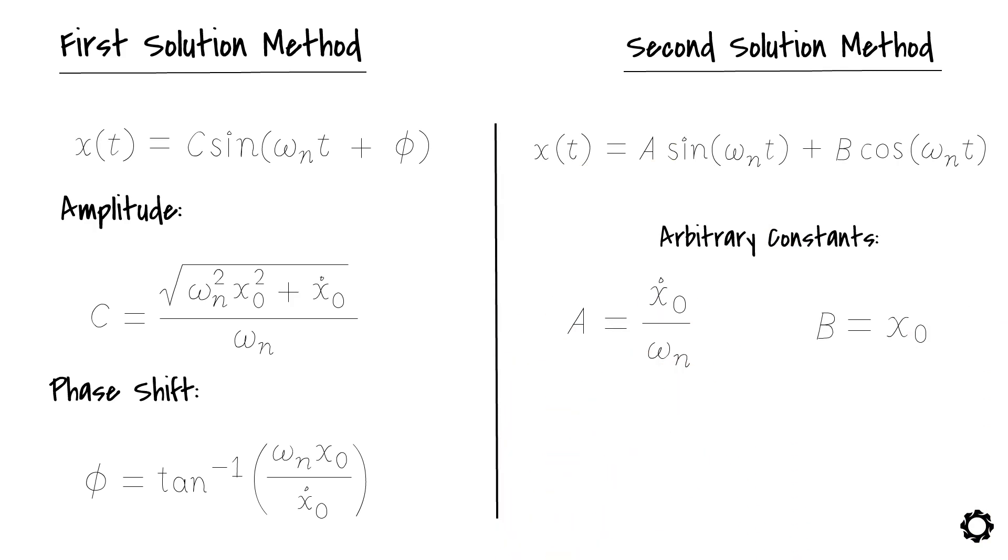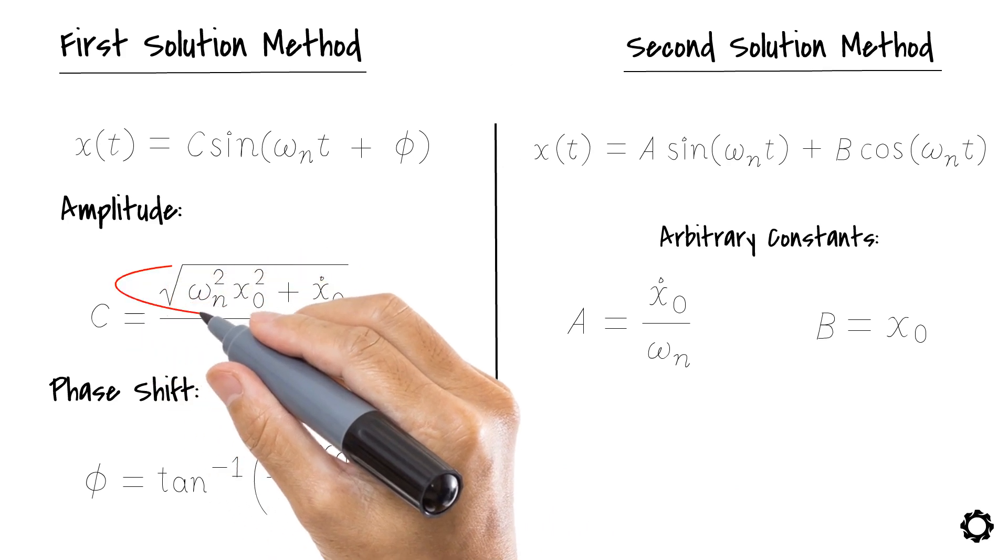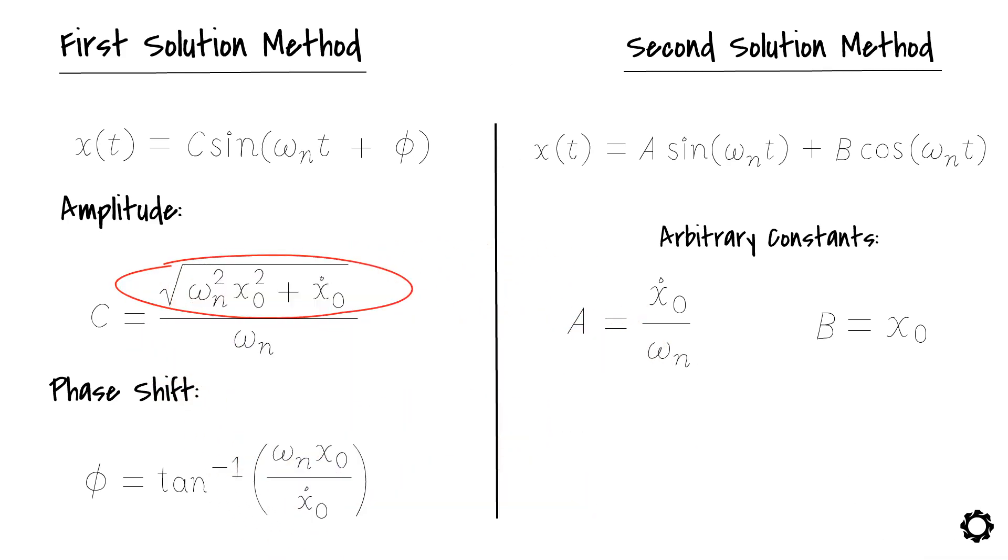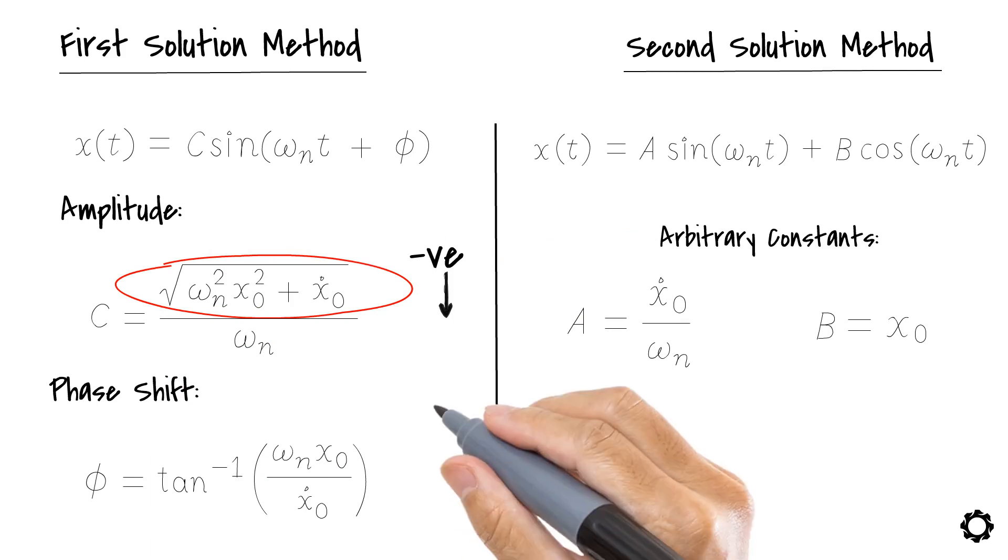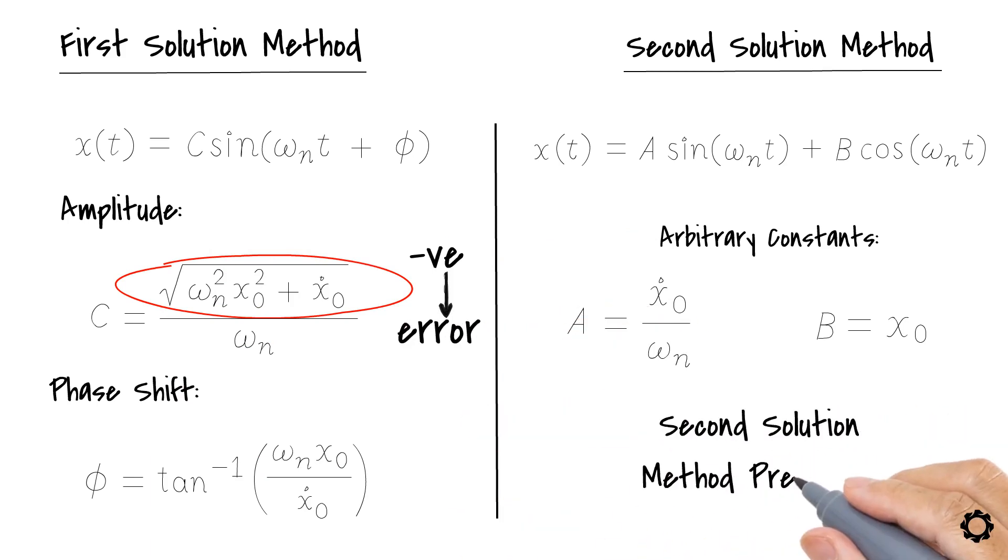Now, you may be wondering why are we using two different methods to get the same solution? Well, it's because of the possibility that the first one may have an error because of the resulting sign of the operation within the square root. That is, the resulting term inside the square root might be negative. So, to avoid errors, I recommend we keep working with the second solution method.